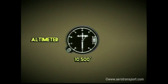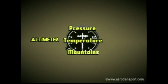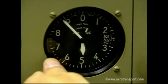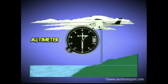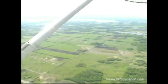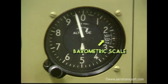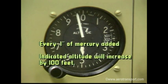The altimeter shown on the screen is reading 10,500 feet. The altimeter is subject to errors caused by pressure, temperature, and the effect of mountains. Pressure errors occur if the altimeter is not calibrated to current barometric readings. This instrument measures heights above sea level, and on a long cross-country flight, barometric pressure can vary. The altimeter has a barometric scale calibrated in inches of mercury, which allows you to keep the altimeter setting current. For every 0.1 inches of mercury added to the altimeter setting, the indicated altitude changes by about 100 feet.